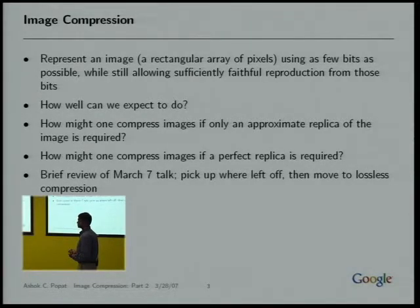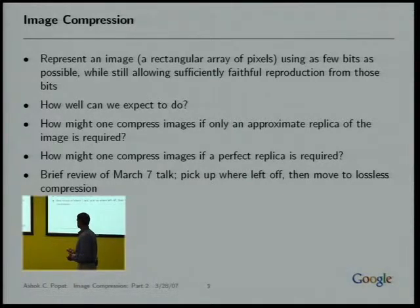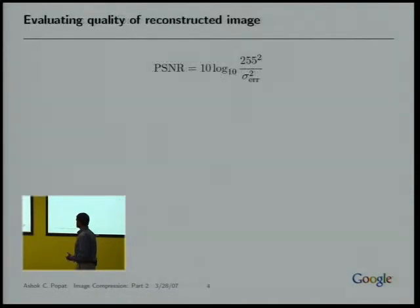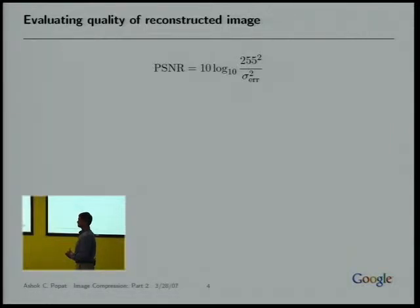Today I'll briefly review some of the main points from the previous talk, then make some final points about lossy compression, and then move on to lossless compression. With lossy compression, we have to know how well we're doing. It's not a perfect measure but it's broadly used, unambiguous, and useful within a coding scheme to assess different versions of parameter settings. It's called the peak-to-peak signal-to-noise ratio.